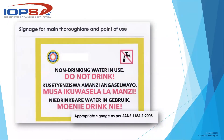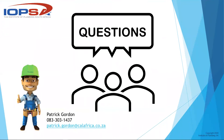Where there are alternative water sources, SANS 1186 requires a sign indicating that the water is non-drinking water - it should only be used for irrigation or toilet flushing, not for human consumption. That is the end of the section on backflow preventers and what SANS says about them.